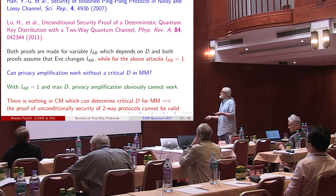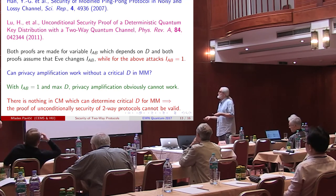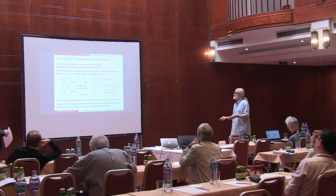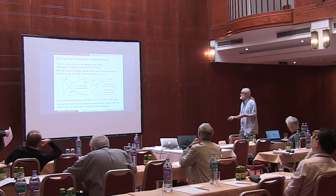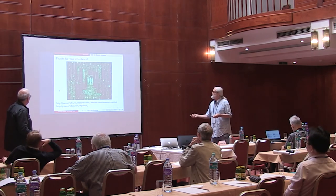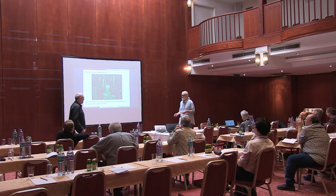As we said, there is no disturbance in the message mode — only disturbance in the control mode — and they are not related to each other. So privacy amplification cannot work when Eve is in the line all the time. The open question is: can it work for some lower level of disturbance? Thank you very much.